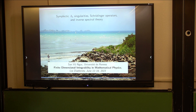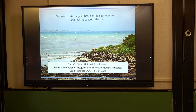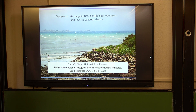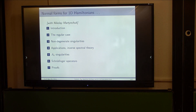So this conference is about finite dimensional integrability. I'm going to be really finite dimensional because I'm going to talk about dimension one, which is supposed to be the easiest case for both symplectic geometry and quantum dynamics. But somewhat surprisingly, there are still some things to say about this. This is based on joint work with Nicolai and Martin Chuuk, who unfortunately could not make it here, but is here in spirit.